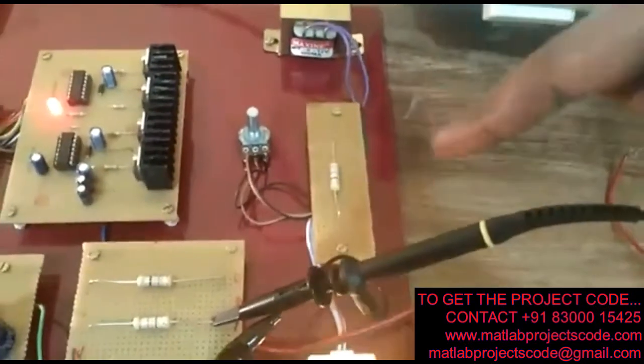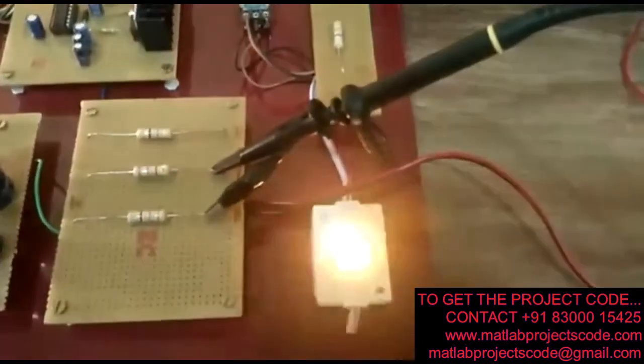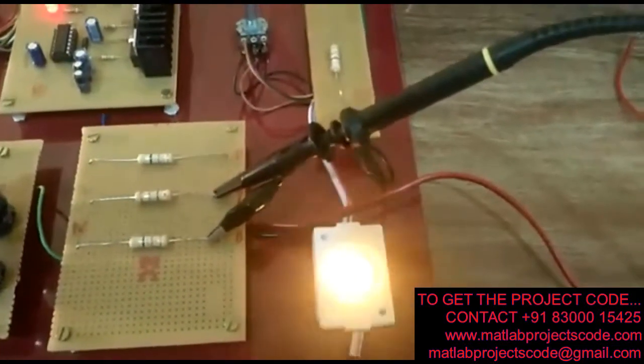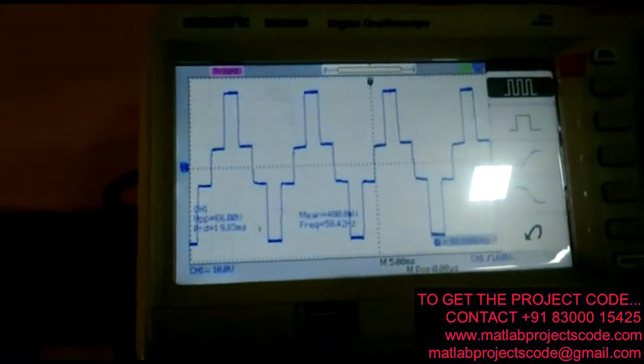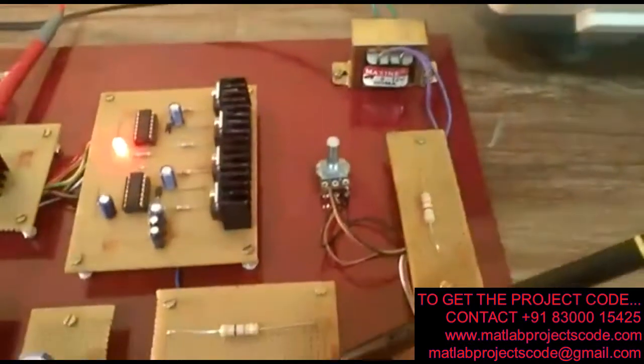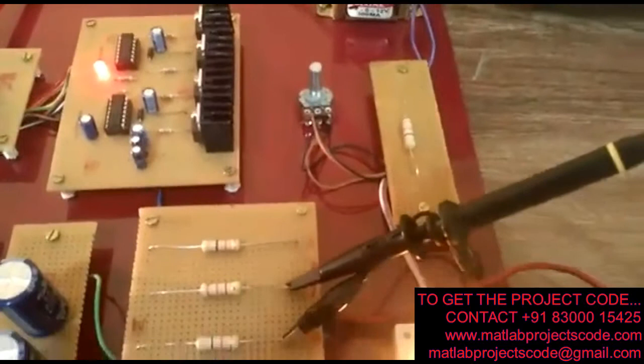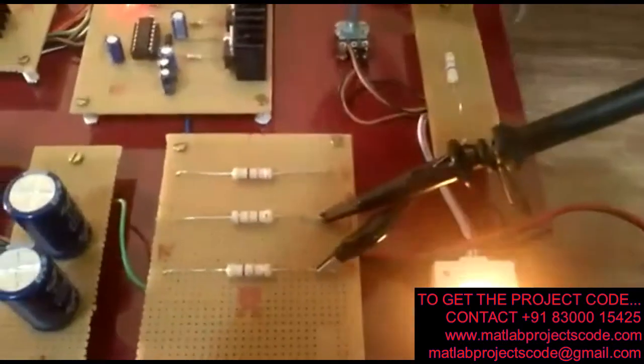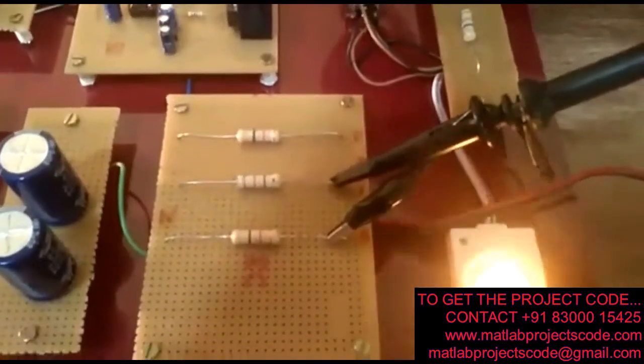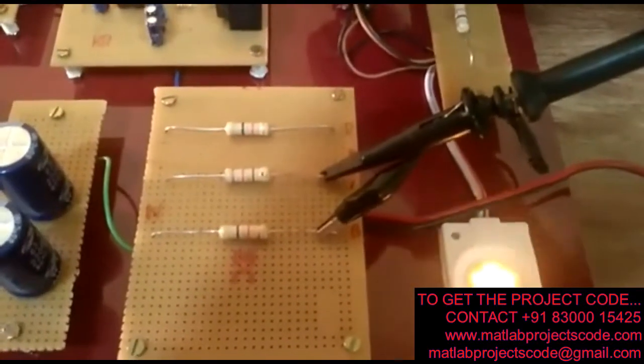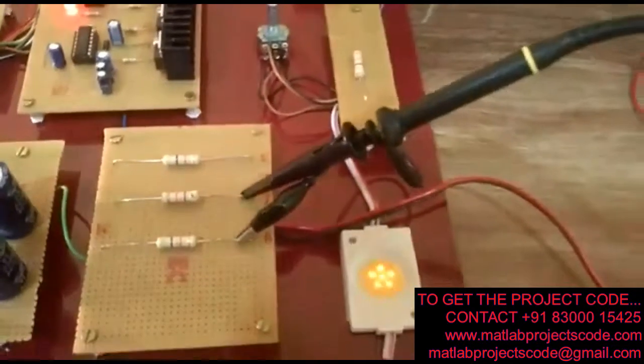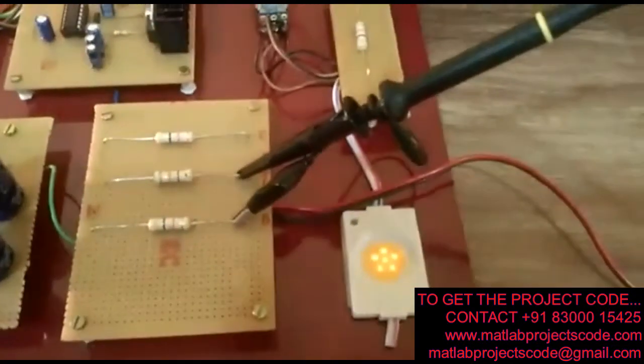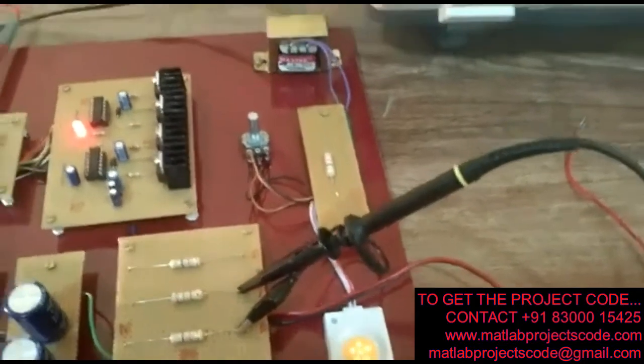Now we will vary the pot to show that there is some fault in the line. As we vary the pot slowly, we can see that the LED is glowing dimly.